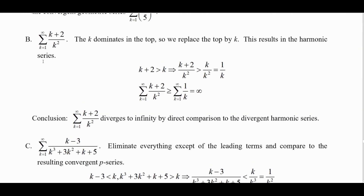For the next one, we're summing from k equals 1 to infinity of (k plus 2) over k squared. The 2 is not that important in the numerator — k dominates — so we end up with k over k squared, which is 1 over k. That's the harmonic series, which diverges — a p-series where p equals 1.